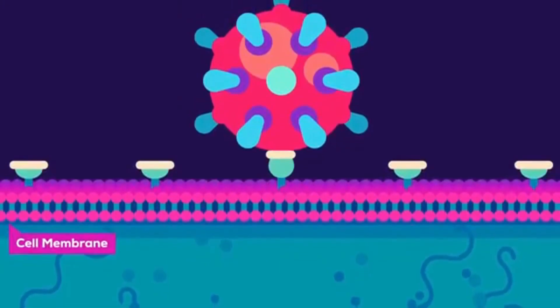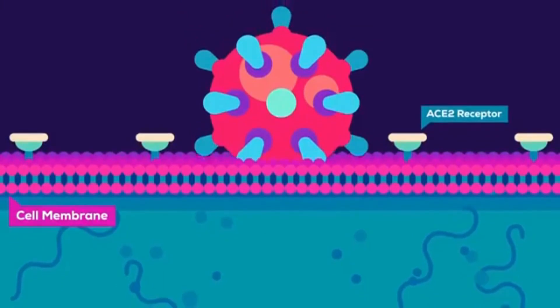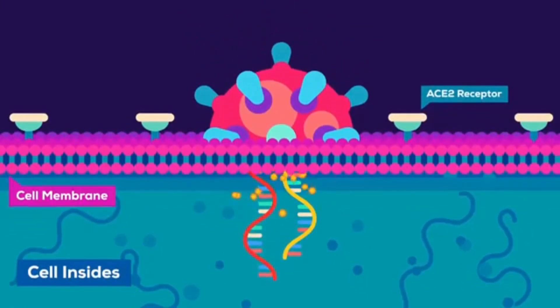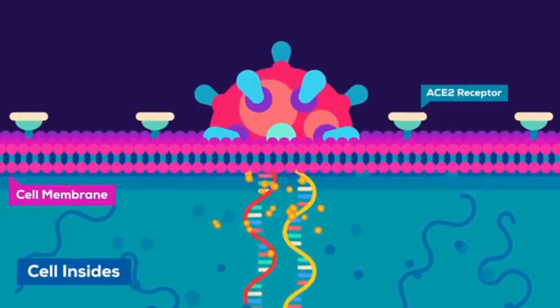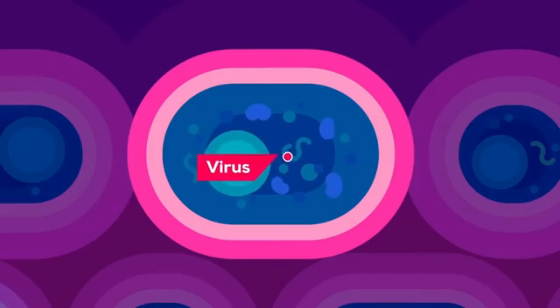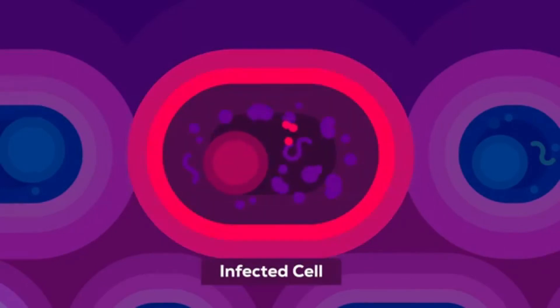Coronaviruses have a spike-like structure on their surface called an S-protein. The spike creates the corona-like or crown-like appearance that gives the viruses their name. The S-protein attaches to the surface of human cells. A vaccine that targets this protein would prevent it from binding to human cells and stop the virus from reproducing.